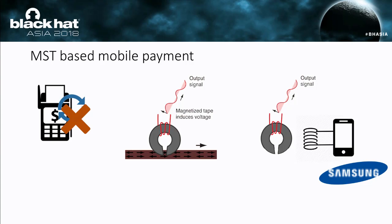To use MST to make mobile payments, the phone is equipped with a coil — the same coil also used for wireless charging. When the user makes a payment, the mobile phone generates a token, modulates the token to an electrical signal, and uses the signal to drive the coil. The coil of the mobile phone generates a magnetic field, which stimulates the coil of the magnetic head inside the POS machine. So the traditional POS machine, designed to support magnetic strip cards only, can be used to do mobile payment.